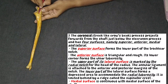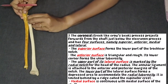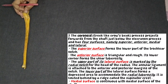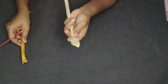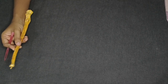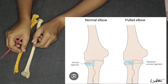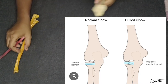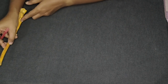Coming to the lateral surface — at the lateral surface there is a small notch, this is the radial notch. The radius head articulates here, so it is called the radial notch. The ulna is connected to the radius with the help of a ligament called the annular ligament. There is a small depression below the radial notch — this accommodates the radial tuberosity.